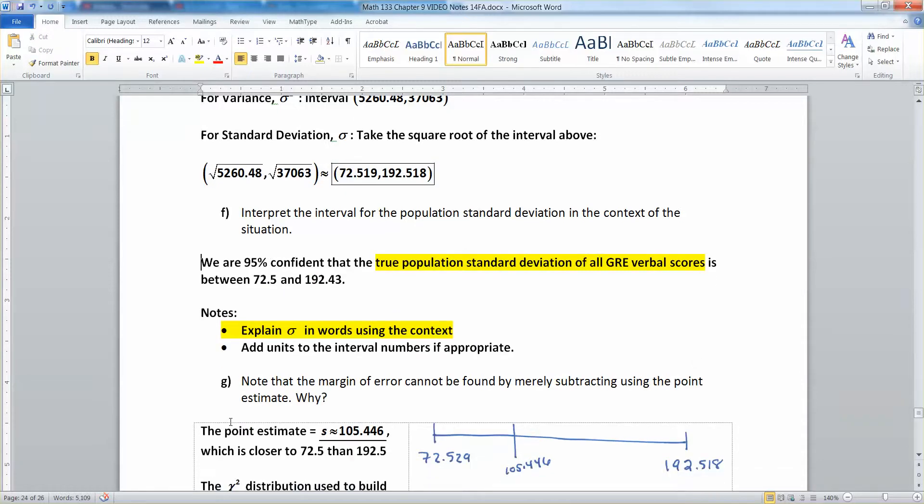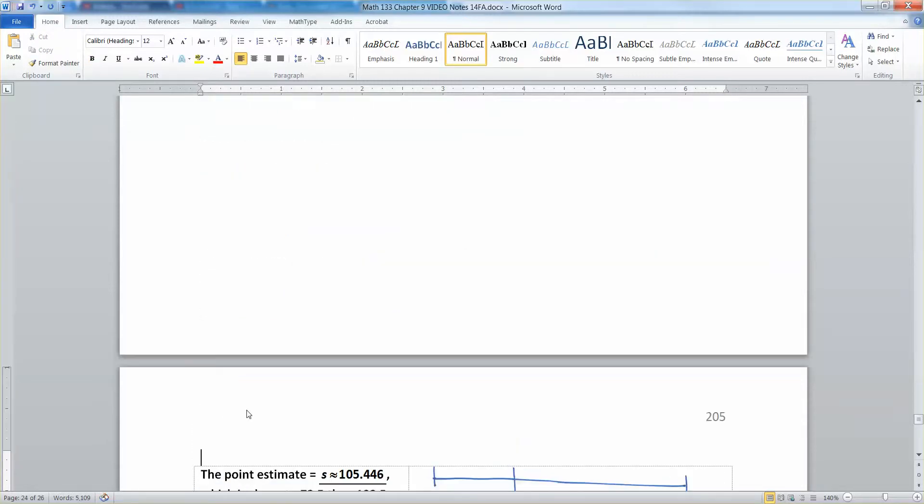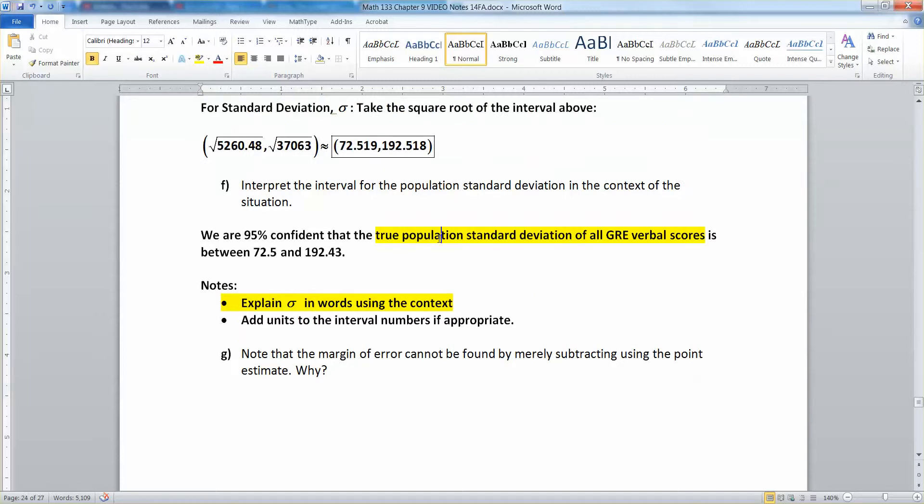We are 95% confident that the true population standard deviation of all GRE verbal scores is between 72.5 and 192.43.